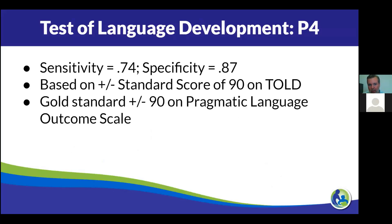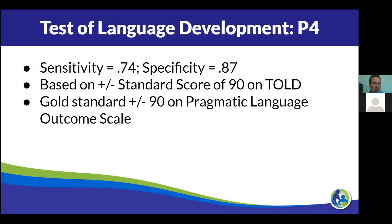Getting back to the TOLD example — where they got the sensitivity and specificity was based on performance on the Pragmatic Language Outcome Scale, which I have never given or seen. My guess is they probably gave a bunch of tests and got a really good result with this one, so they included it in the test manual. A lot of the results in that table were from test manuals and were the ones that made sense; others were from peer-reviewed studies not affiliated with the test developer. I don't think test developers purposefully give invalid data, but they certainly have a vested interest in showing the best data they can.